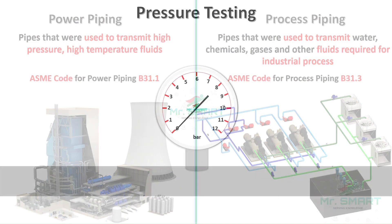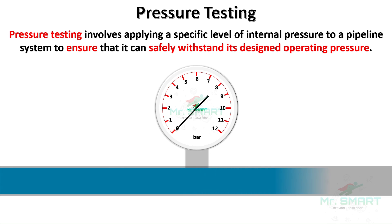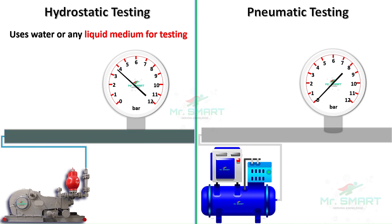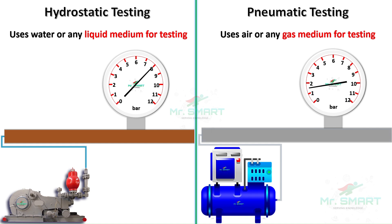So, what does pressure testing mean? Pressure testing involves applying internal pressure to a pipeline to ensure that it can withstand its operational pressures safely. It helps to identify weak points and confirms the integrity of the pipe system. There are two main types: hydrostatic testing, which uses water or another liquid to test the pipe's strength and leaks, and pneumatic testing, which uses air or an inert gas such as nitrogen. While effective, pneumatic testing is considered more hazardous because gases are compressible and can cause a rapid release of energy in case of failure.